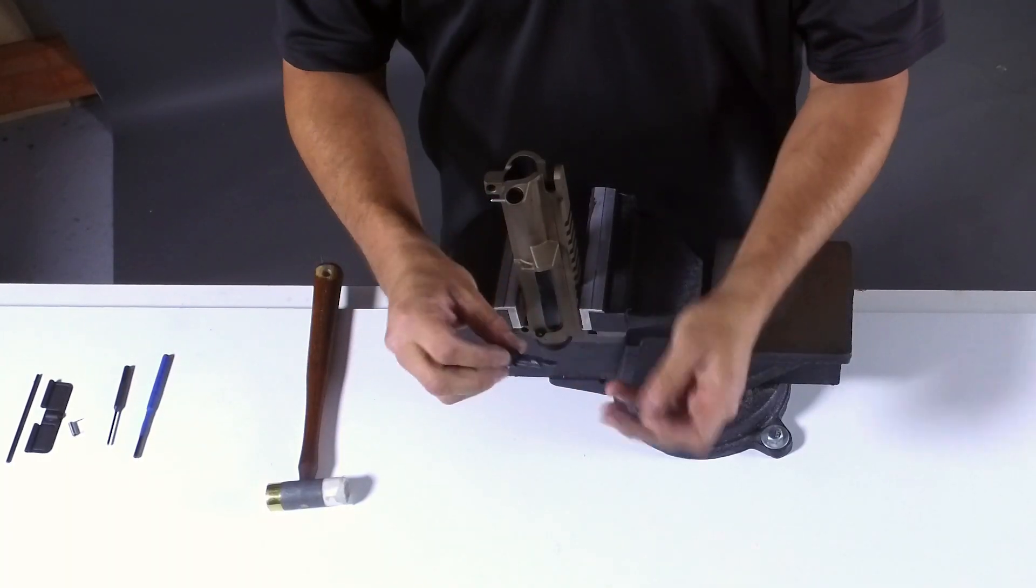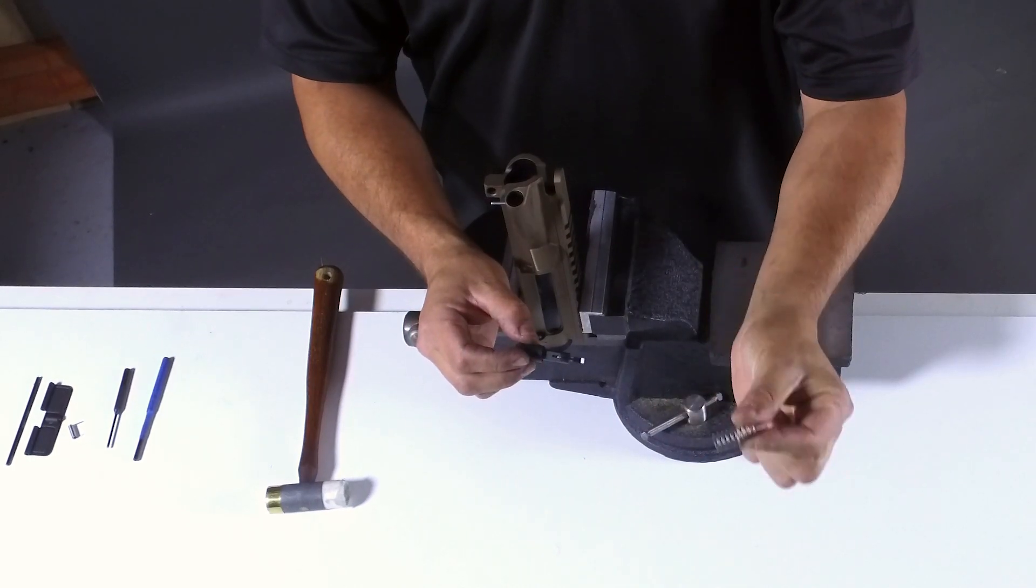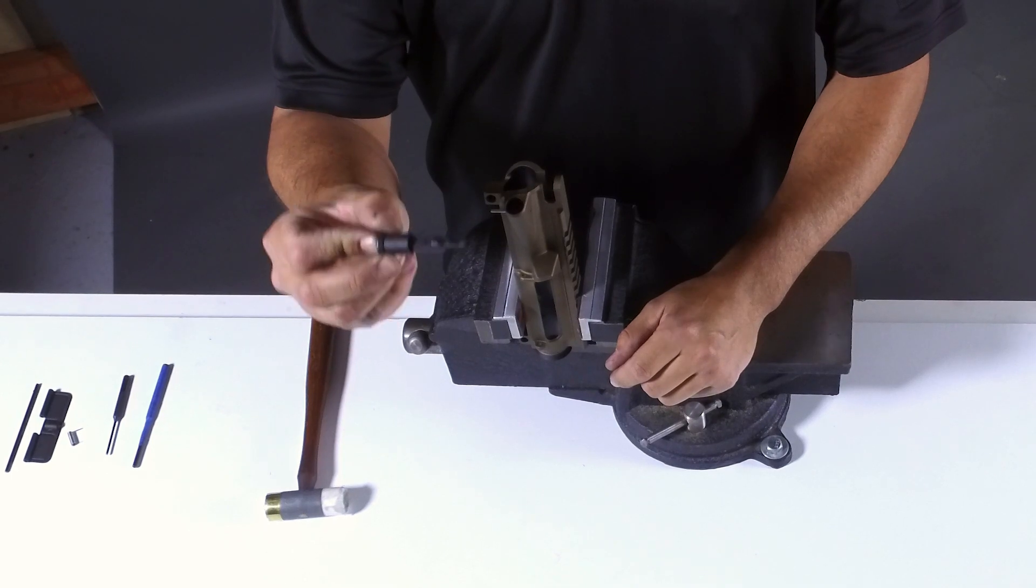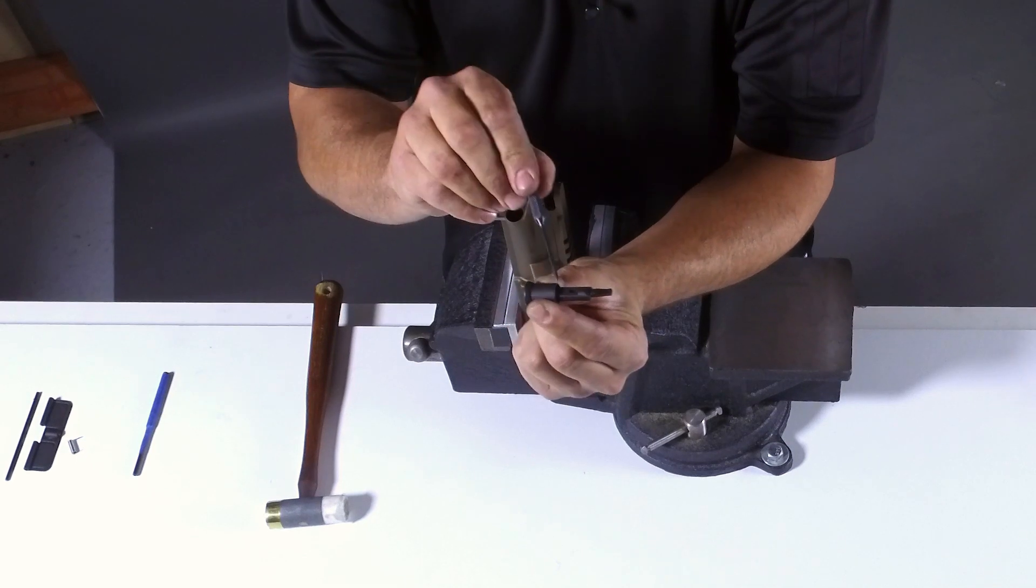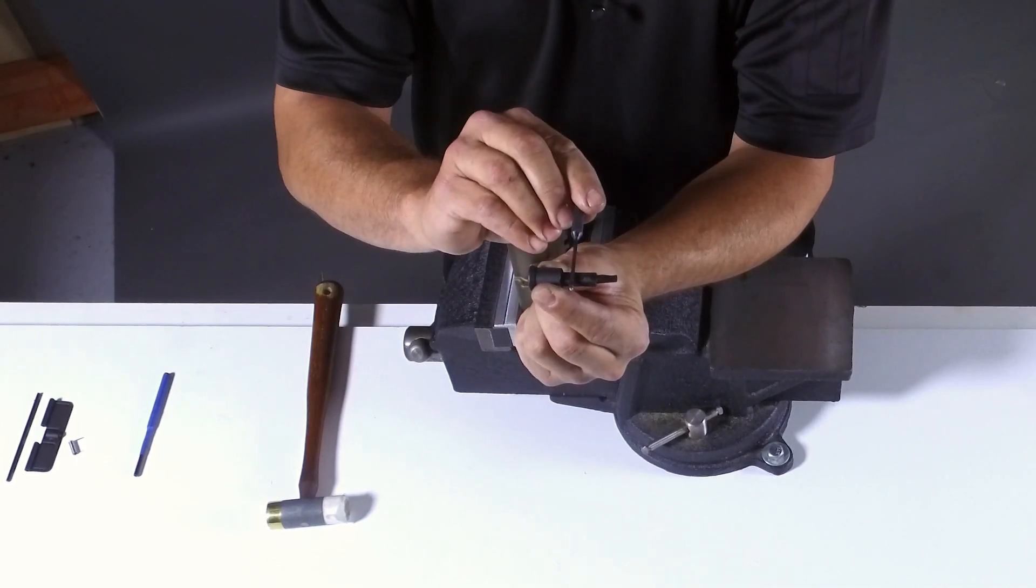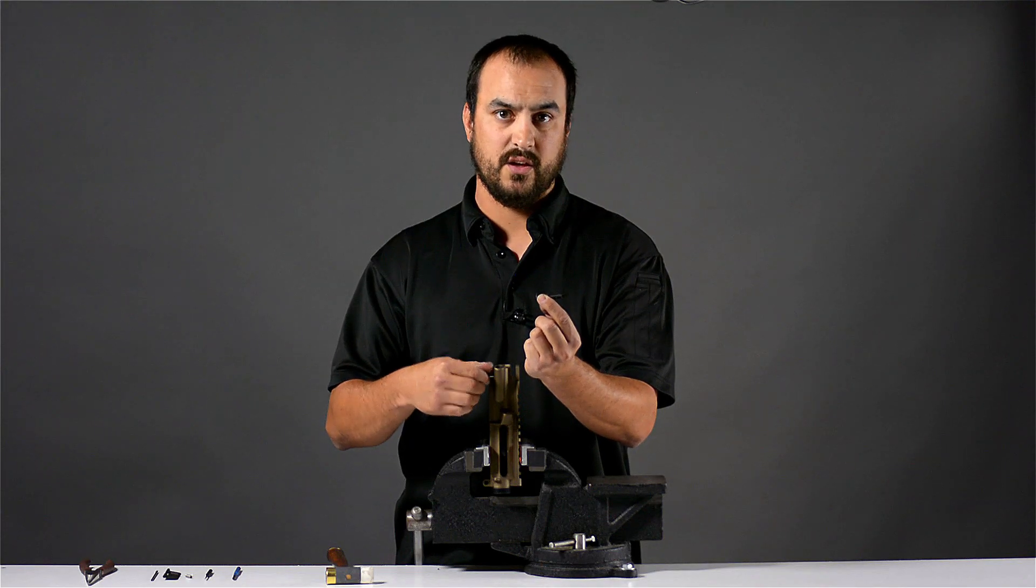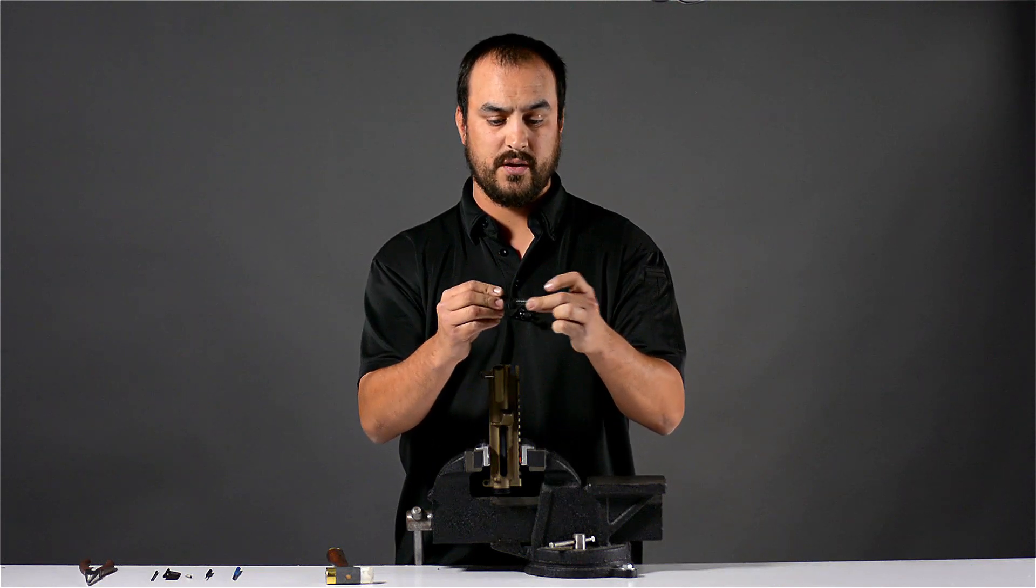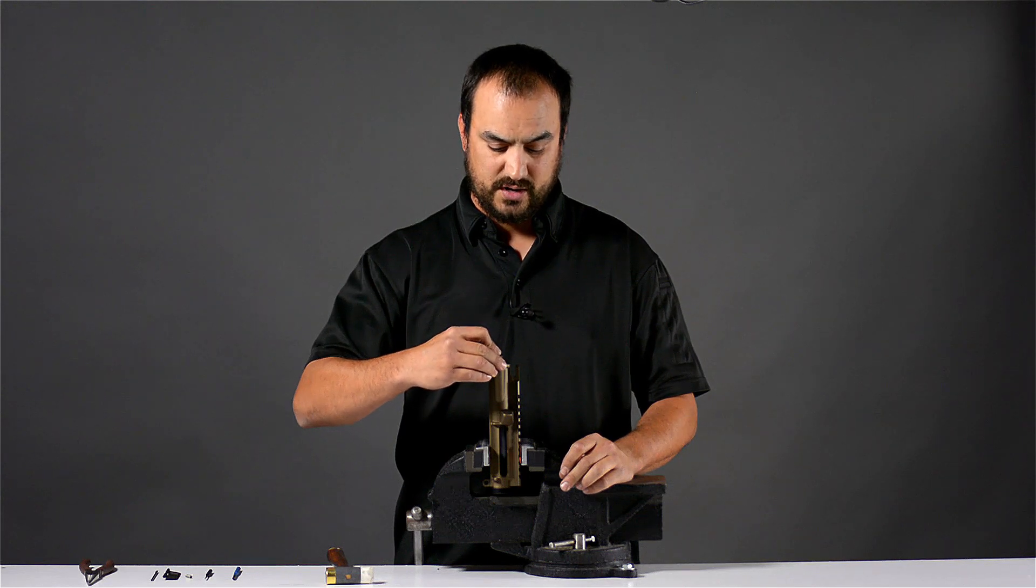At this point, we are going to grab our forward assist and the forward assist spring. The forward assist does go in there in one direction. There is a cutout on the front of the forward assist right here. This is where the roll pin will actually slide into place and keep it contained in the forward assist housing. We are going to take the spring and put it on the forward assist. We are going to push it down into the hole, making sure the cutout is facing the roll pin side.